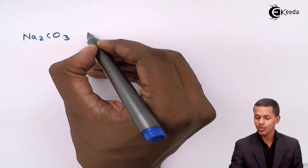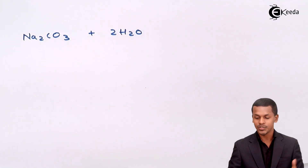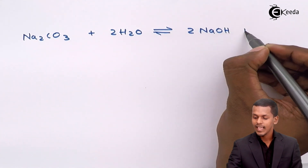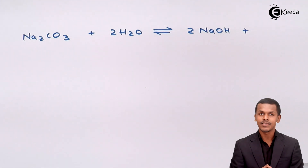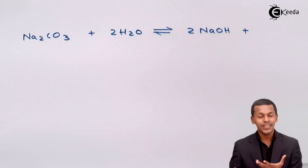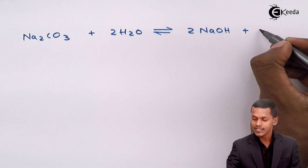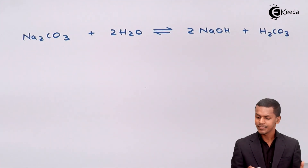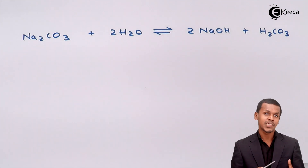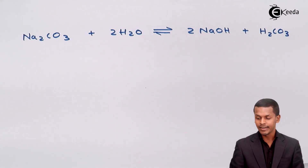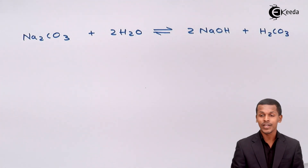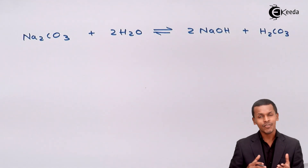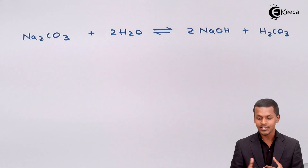So, Na₂CO₃ dissolved in water requires two moles of water to form two moles of NaOH along with a weak acid, H₂CO₃. Na₂CO₃ is a strong electrolyte, so it will dissociate completely. NaOH is also a strong base, so it will also dissociate completely. We can arrange this chemical reaction accordingly.